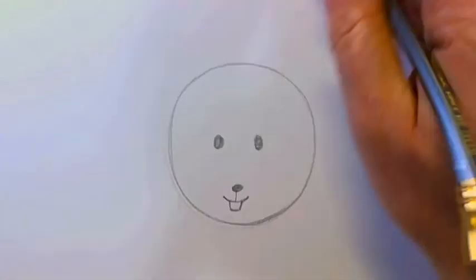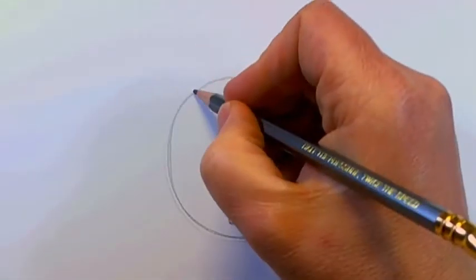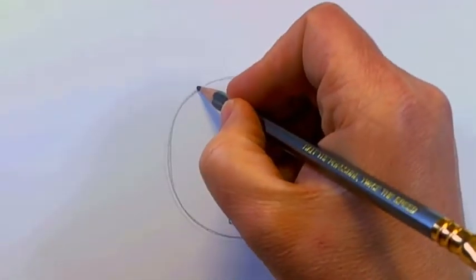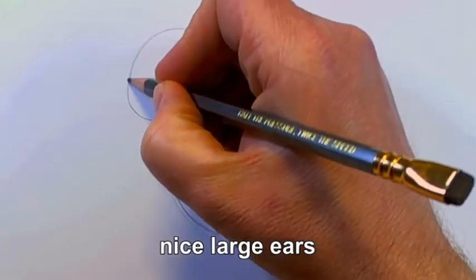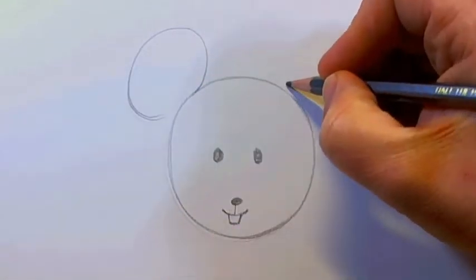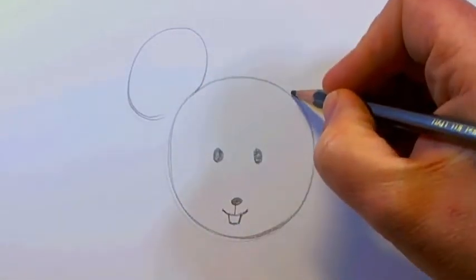For his ears, you can put nice, large C shape on either side.